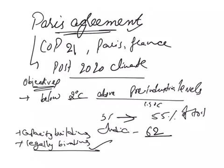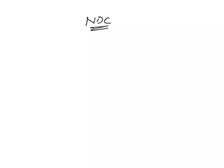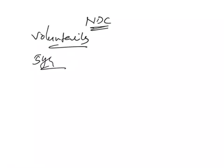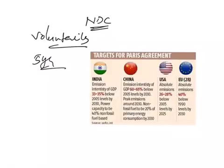The Paris Agreement requires all parties to put forward their best efforts through Nationally Determined Contributions. These are the national pledges by countries to cut emissions voluntarily. This includes requirements that all parties report regularly on their emissions and implementation efforts. Every 5 years, there will be an assessment of the collective progress towards achieving the purpose of the agreement.